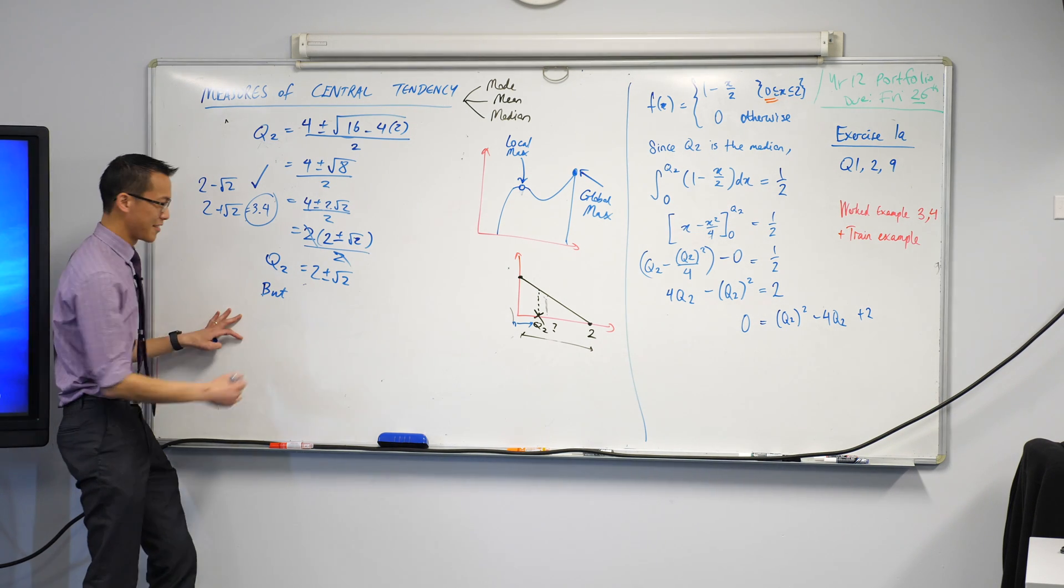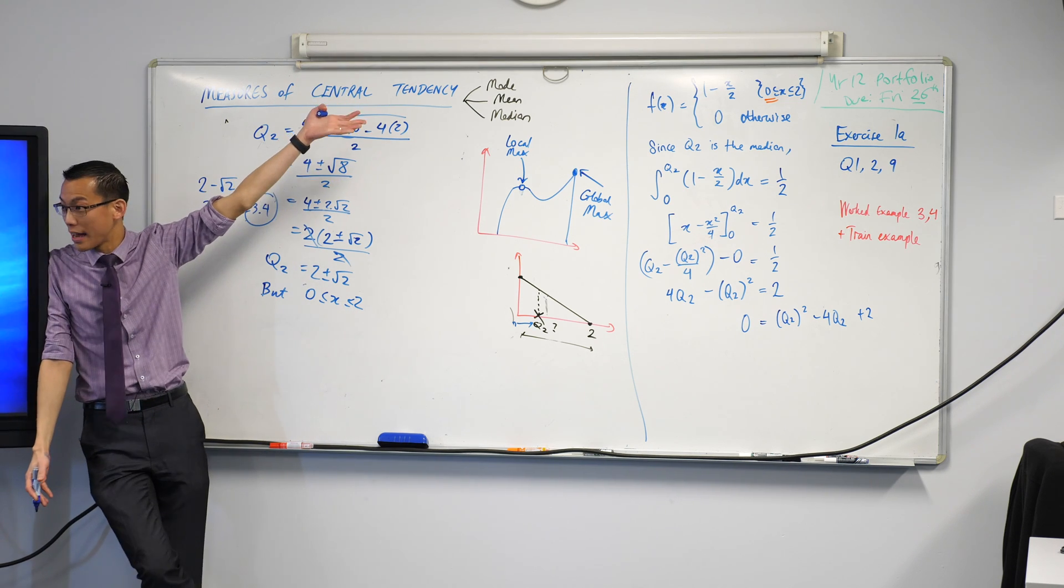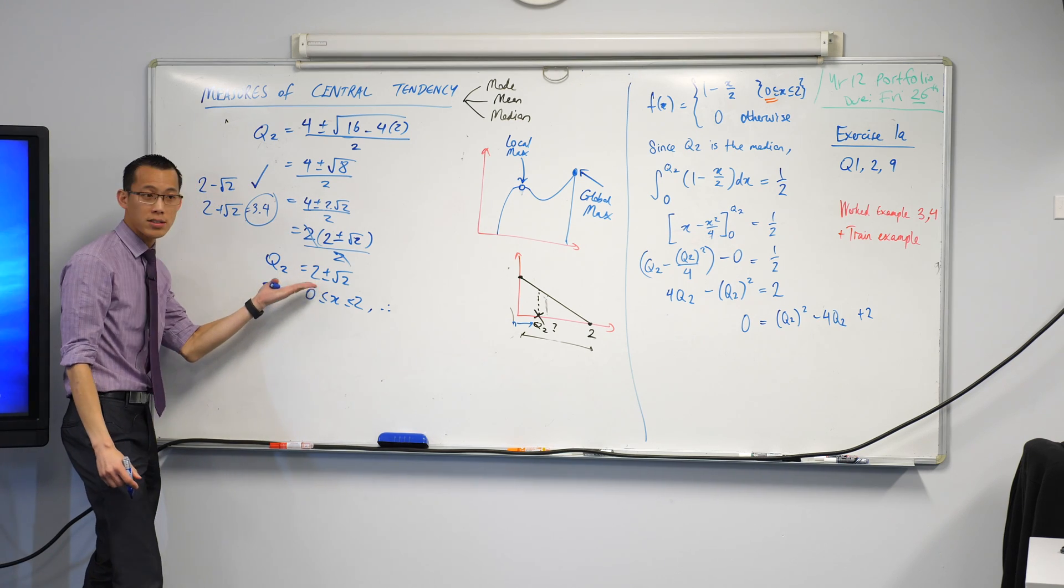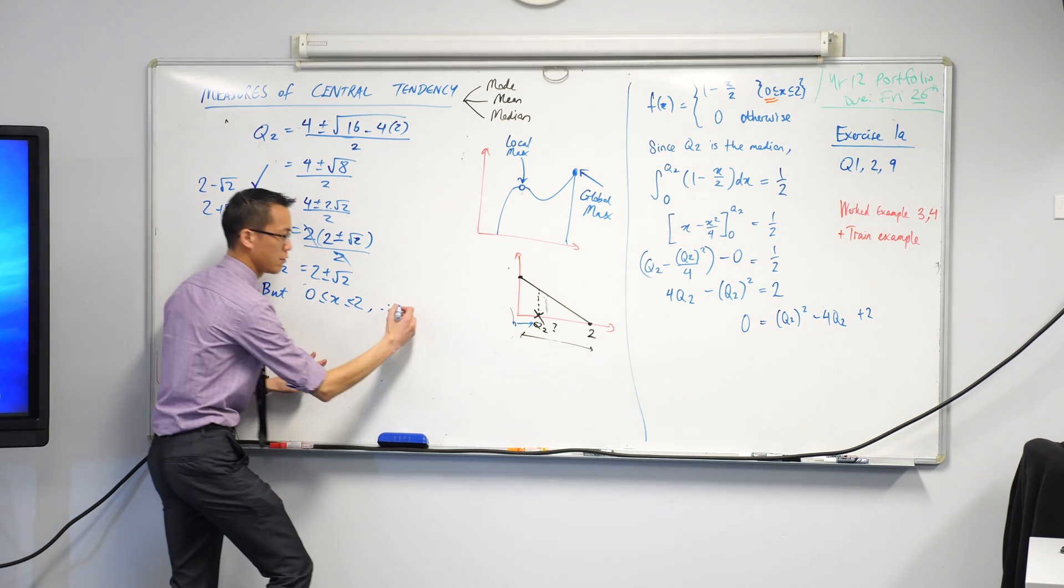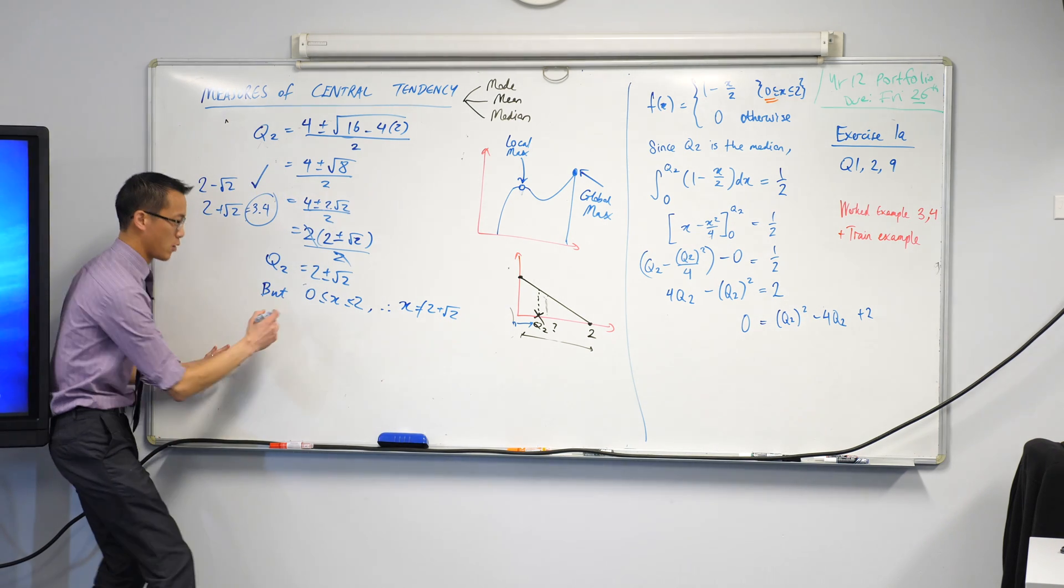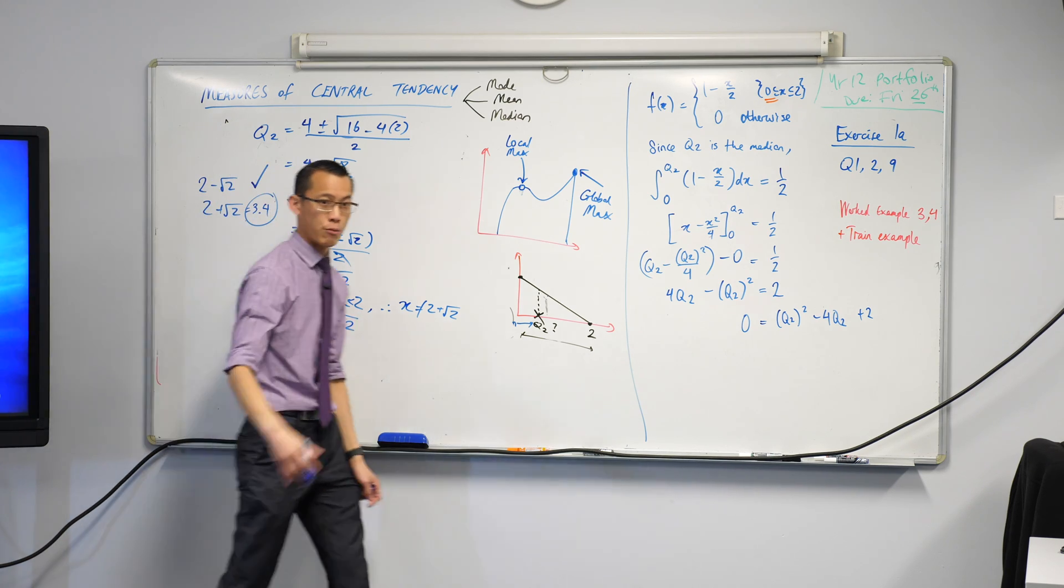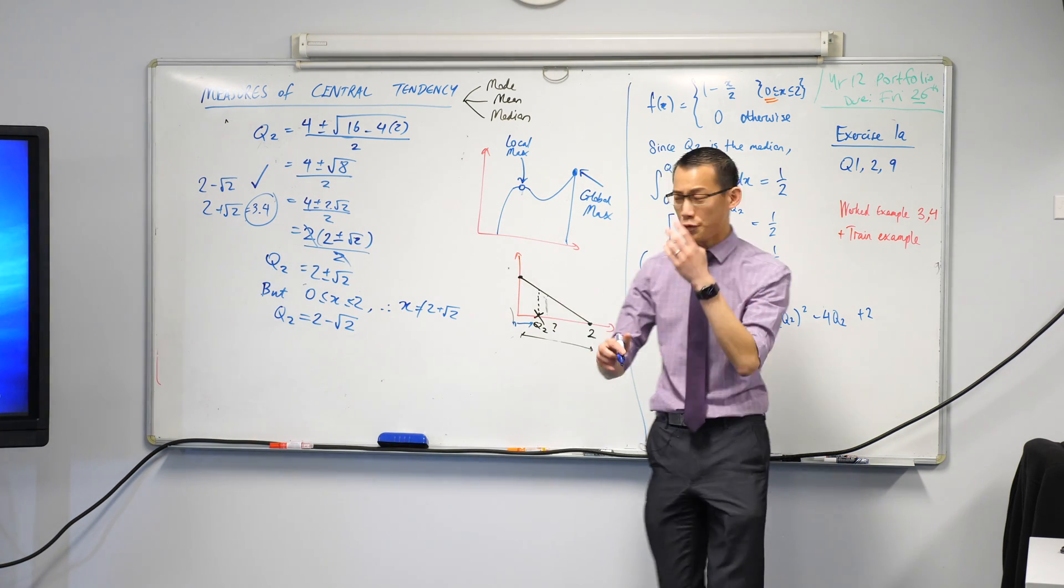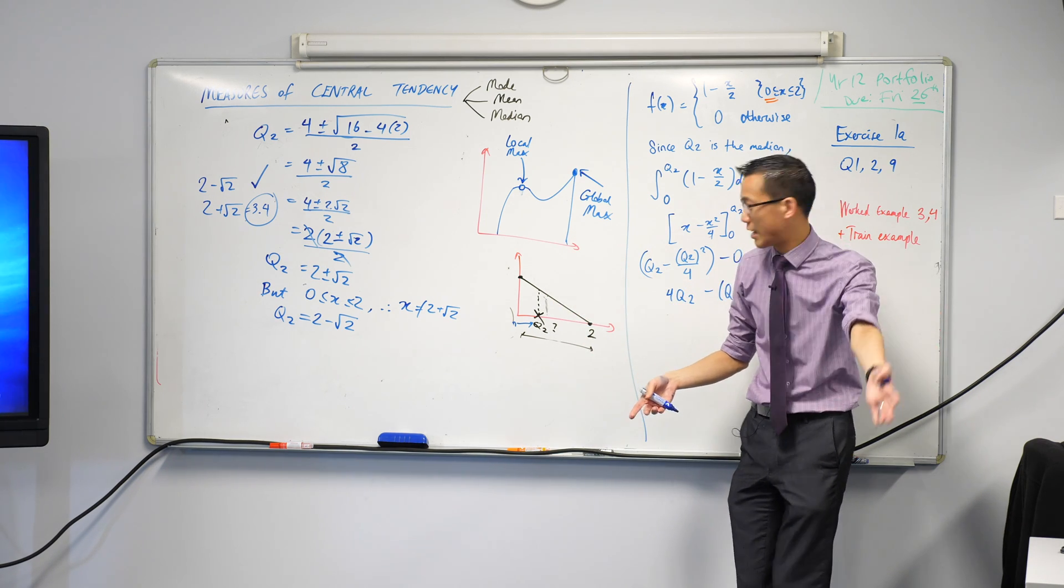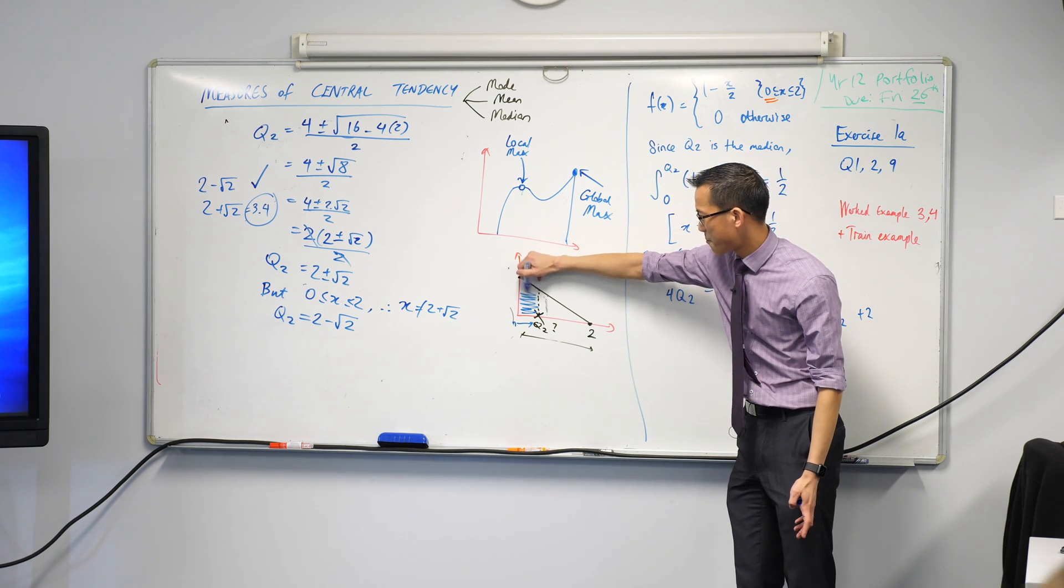But what? But I have a restriction on x. I had it from the first line of my question. Therefore, x can't possibly be 2 plus root 2. So therefore, it has to be the other one. Q2 must equal 2 minus root 2. Now, root 2 is about 1.4. So if you do 2 minus that, you're going to get something like 0.6. You go ahead and get the actual value. Does that match with that intuition of what we expected? It's about here, right?